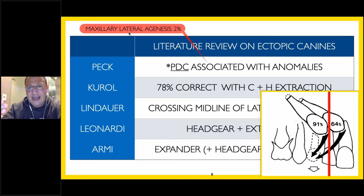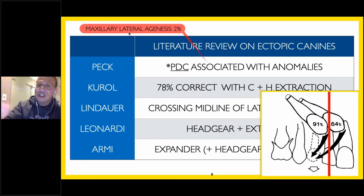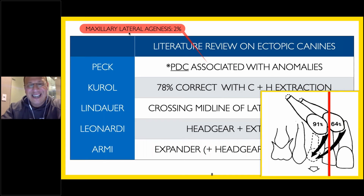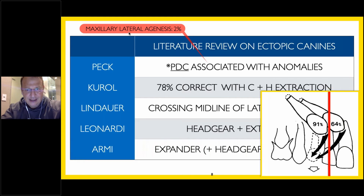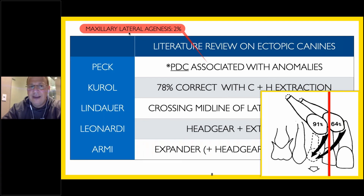So if you have a palatally displaced canine, take out C and H early and maybe throw in a distalizer — and be careful with the protraction face mask, which will cause arch length loss. Armie said don't just take out C and H, but also expand. That's how you get that 78 percent to turn to 82 or 84 percent. In summary: if you see peg laterals or missing laterals, think palatally displaced ectopic canines. Take out C and H early to help those teeth auto-correct, and if you need to, distalize and/or expand. This is a summary of all those key board articles that you need to know.